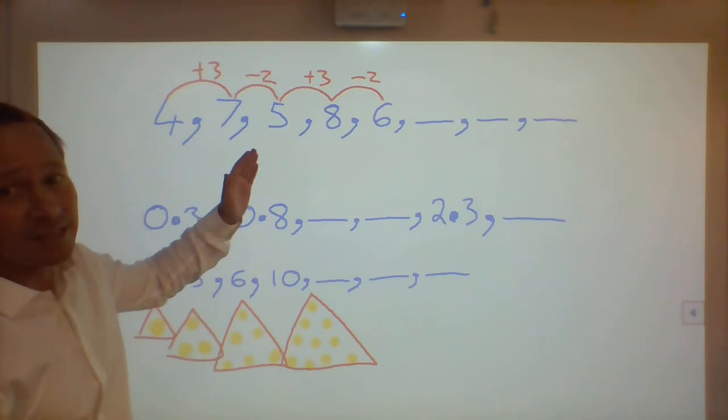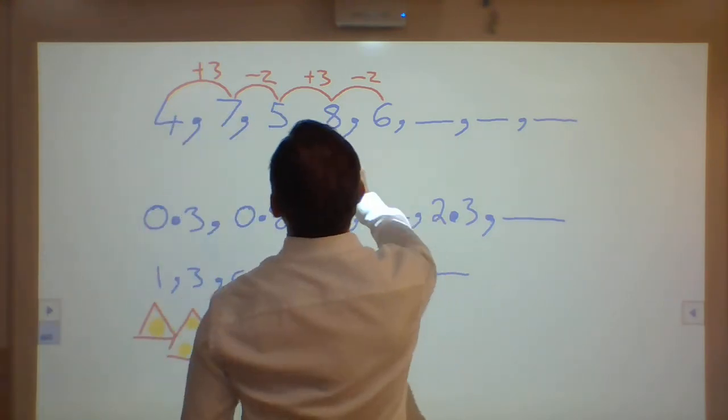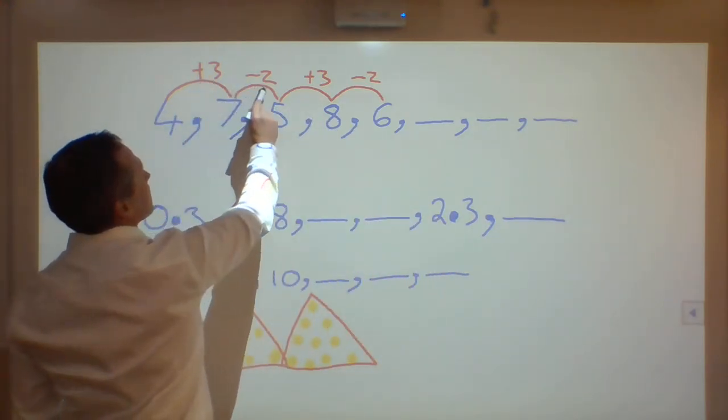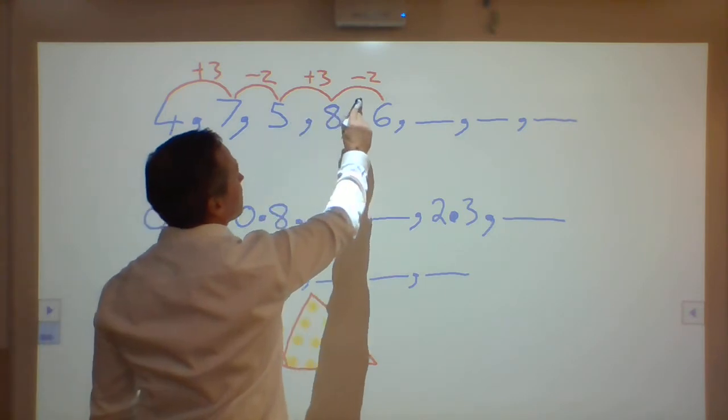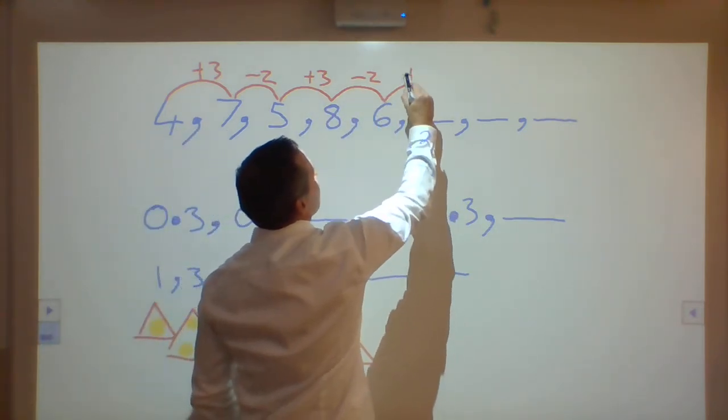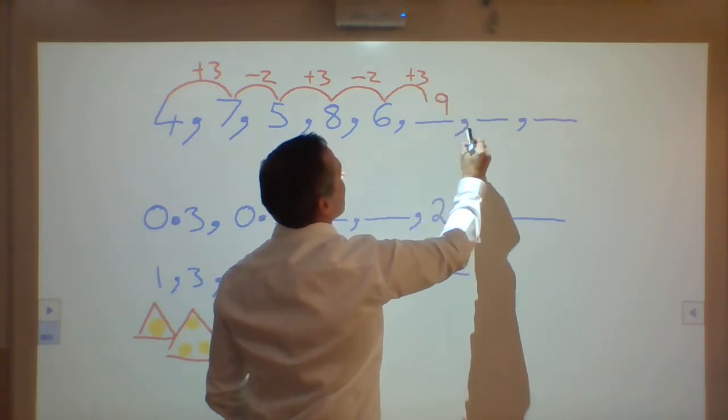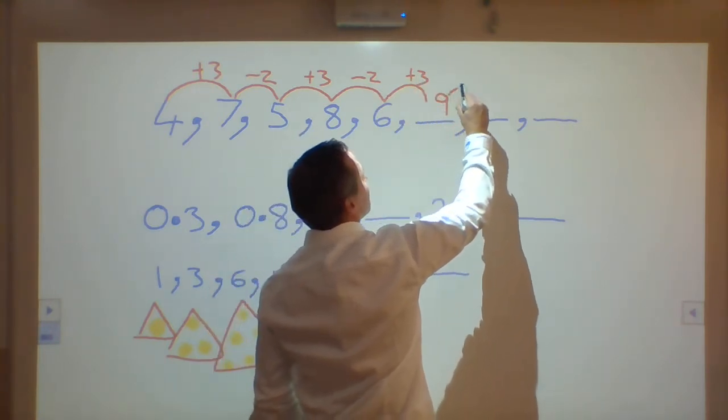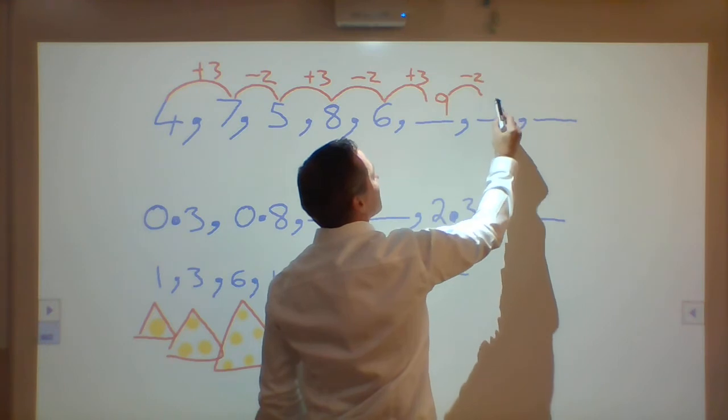Continuing this pattern, we've got plus 3, minus 2, plus 3, minus 2. Equals plus 3, plus 6, plus 3. You know what I mean? Back to the minus 2. Minus 2 would be 7.